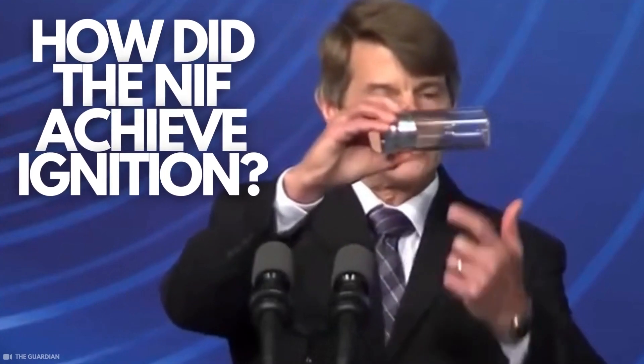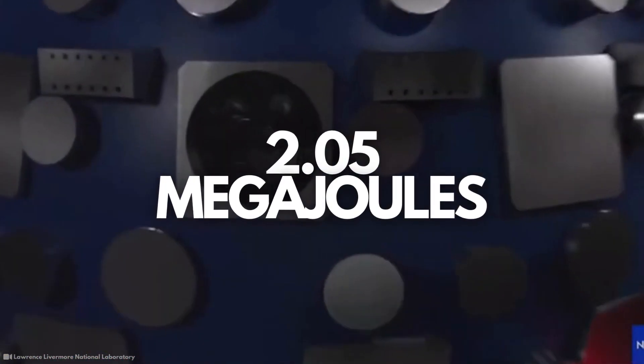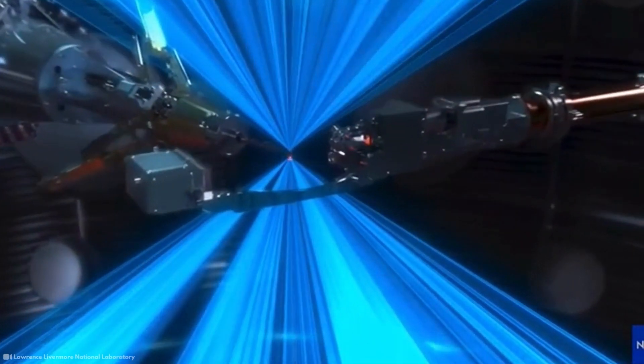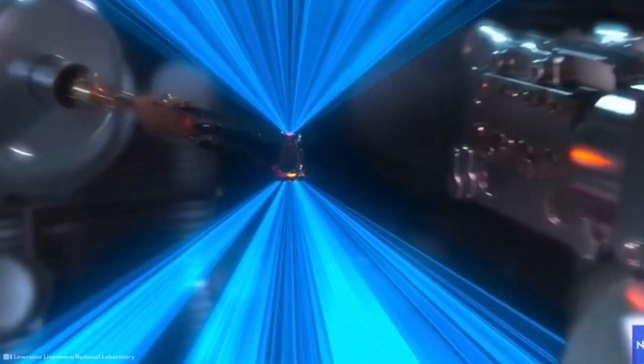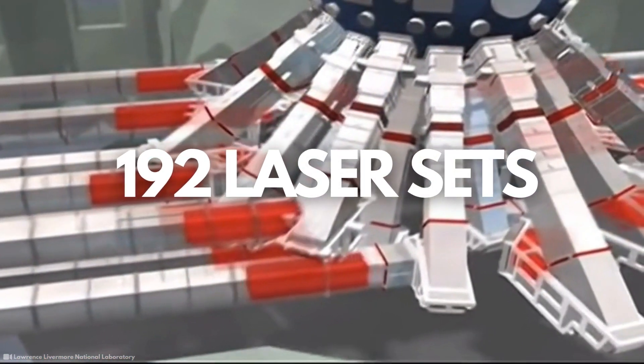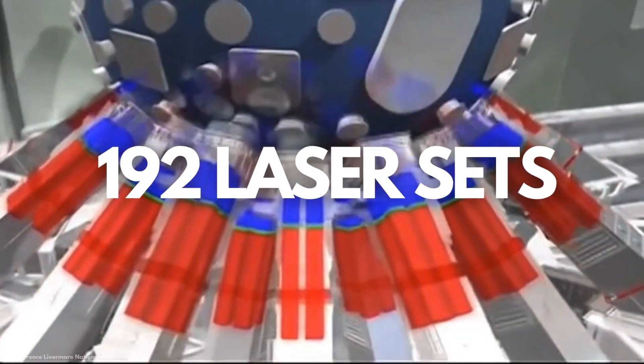How did the NIF achieve nuclear ignition? NIF delivered nearly two megajoules of energy to a pea-sized gold cylinder containing a pellet of the frozen hydrogen isotopes, deuterium and tritium. The facility used 192 laser sets for this energy delivery.